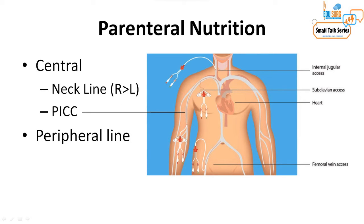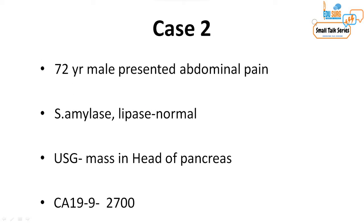Parenteral nutrition access can be peripheral or central. Central parenteral nutrition fluids are hyperosmolar and high calorie density. Central access can be achieved using a neck line or a peripherally inserted central catheter. Alternatively, a peripheral line can be used for peripheral parenteral nutrition.